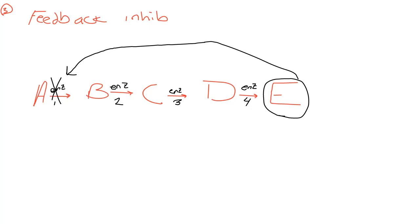By inhibiting this first enzyme, A will never be converted to B, B to C, and so on. Eventually we don't have any extra E in the cell and the cell is happy. This final molecule shuts down the first enzyme in the pathway — it's called feedback because the product is feeding back into the pathway and inhibiting it. That is the end of the enzyme content.